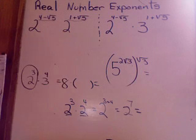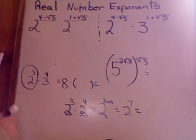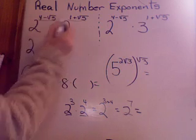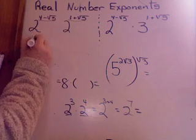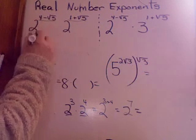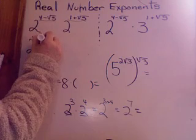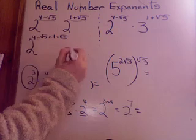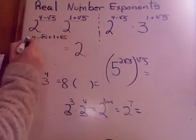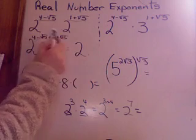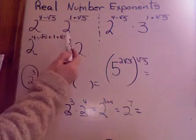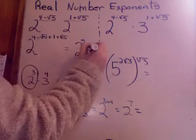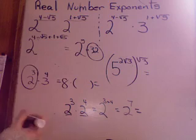When I do this problem, are the bases the same? Sure they are. So my answer is to add the exponents: 4 minus root 5 plus 1 plus root 5. If I do the real addition, 4 plus 1 is 5, and root 5 and minus root 5 cancel to 0. So the result is 2 to the 5th, and 2 to the 5th is 32.